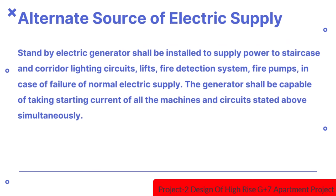Regarding alternate source of electric supply: a standby electric generator shall be installed to supply power to staircase and corridor lighting circuits, lifts, fire detection system, and fire pumps in case of failure of normal electric supply. The generator shall be capable of taking starting current of all the machines and circuits stated above simultaneously.